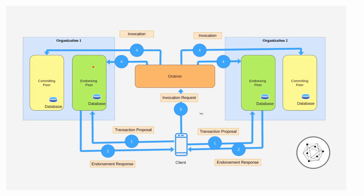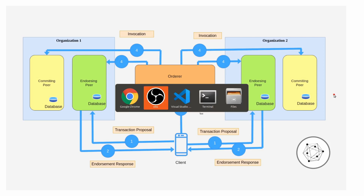The next topic covers this topology: what is the transaction proposal, what is the response, invocation request, and the invocation. When we write the API for invoking transactions, I will show exactly what the flow is and how transaction proposals are created and what they contain. There is one minor correction — let's jump into VS Code.